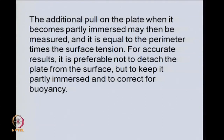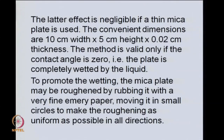For accurate results, it is preferable not to detach the plate from the surface but to keep it partly immersed and correct for buoyancy. That buoyancy correction could be minimized if we use a thin mica plate of dimensions such as 10 cm width, 5 cm height, and 200 micron thickness. The method is valid only if the contact angle is 0 — the liquid should completely wet the plate. To promote this wetting, we may roughen the mica plate using a very fine grade emery paper, making the roughness as uniform in all directions as possible.